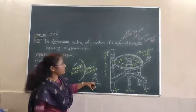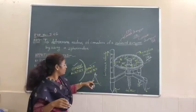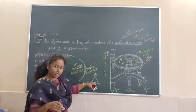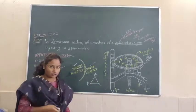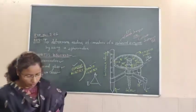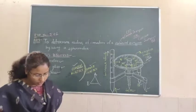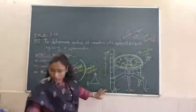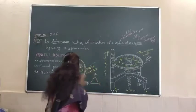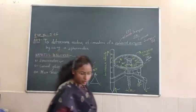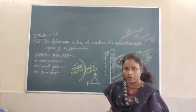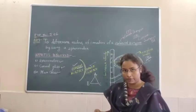When we calculate the radius of curvature using that formula, we need some calculation from this triangle. I hope you are clear about this apparatus and the aim of the experiment.